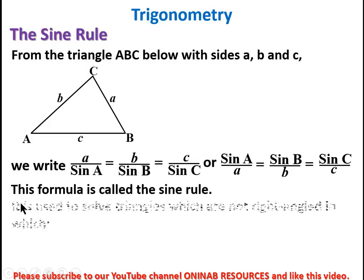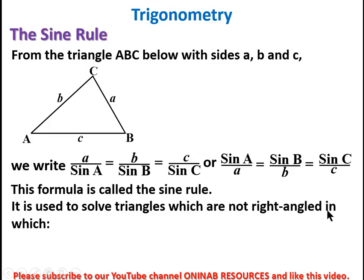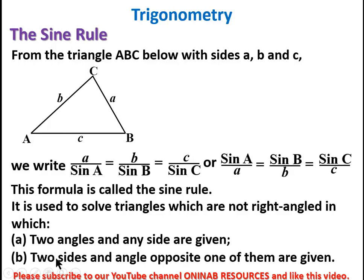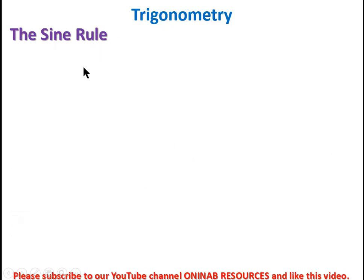The Sine Rule is used to solve triangles which are not right-angle triangles. It applies when two angles and any side are given — for instance, if angle A and angle B are given along with any of the three sides. The second case is when two sides and an angle opposite one of them are given, such as sides a and b with either angle A or angle B given.